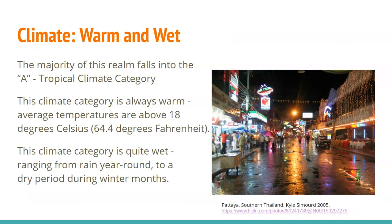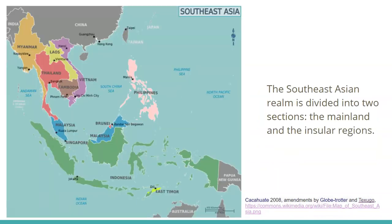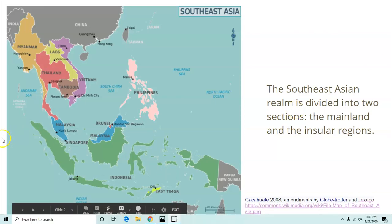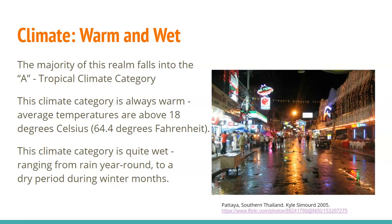Looking at the climate of this region, we are in what's called the tropical climate category, also known as the A climate category in the Köppen climate system. This photo is from Pattaya in southern Thailand. The tropical climate category is located in the tropics, focused around the equator, which runs right through this realm. Only portions of Myanmar are outside of the tropics, between the Tropic of Cancer and the Tropic of Capricorn.